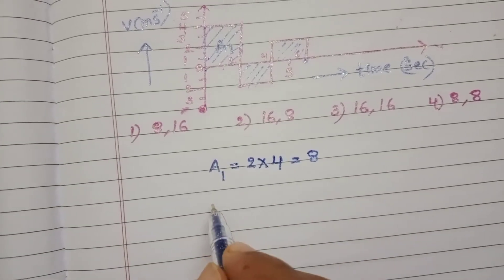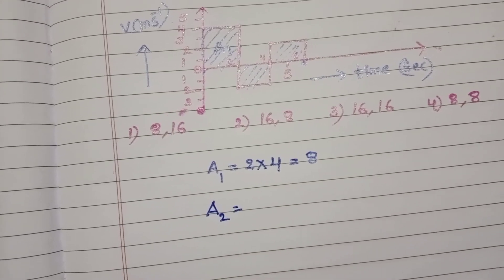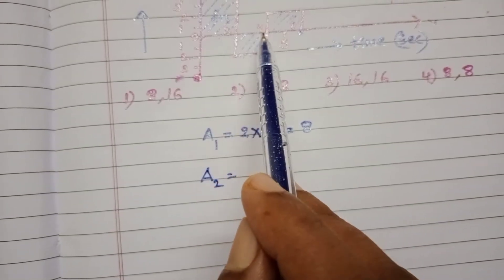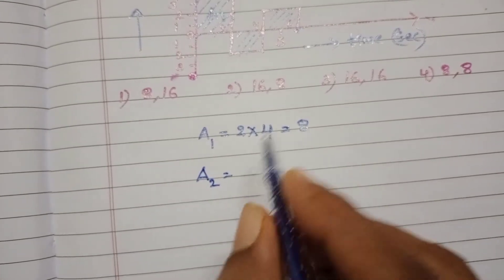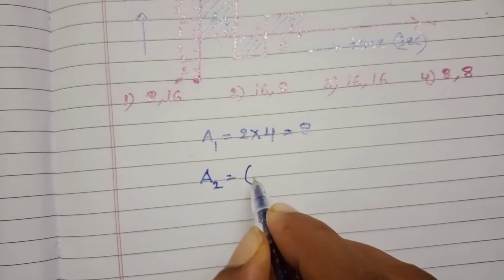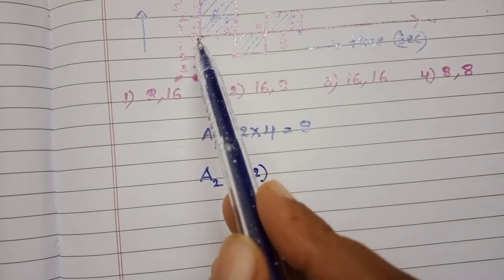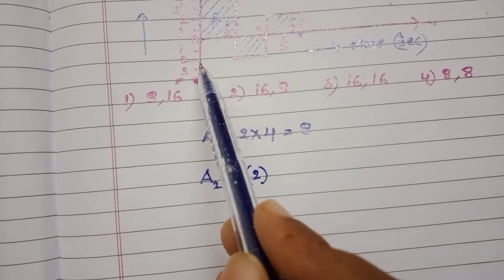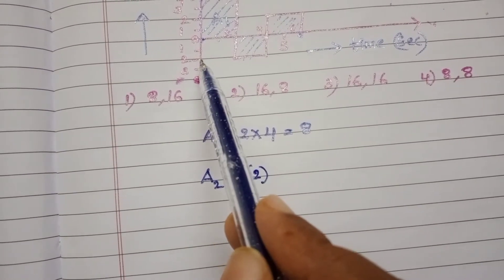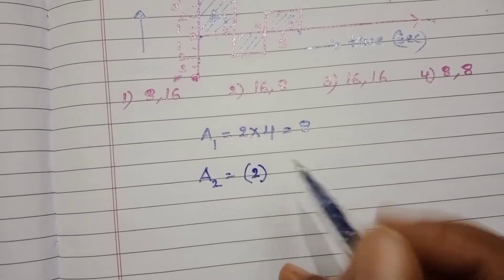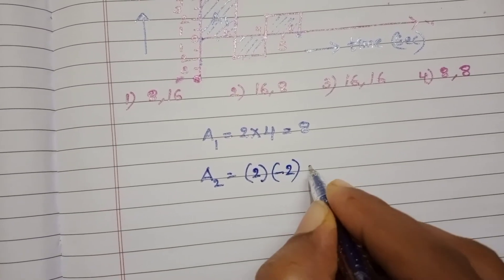Next, A2 is from 2 to 4 seconds. So the time is 4 minus 2 equals 2, and the velocity is in the downward direction — the negative side — from 0 to 2. So A2 equals minus 2 into 2, which gives minus 4.